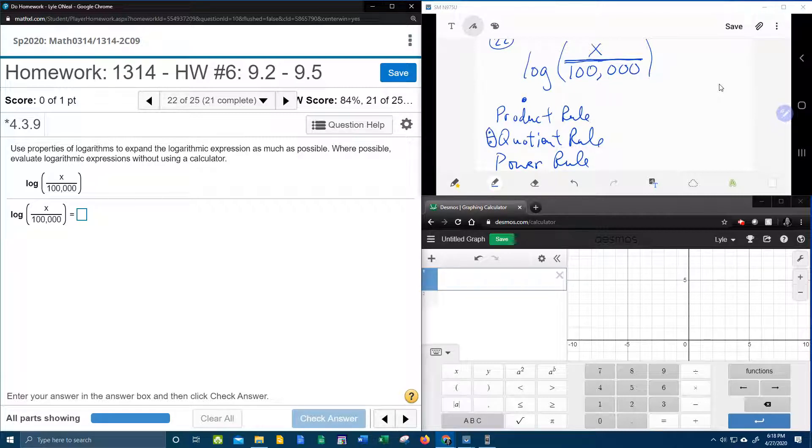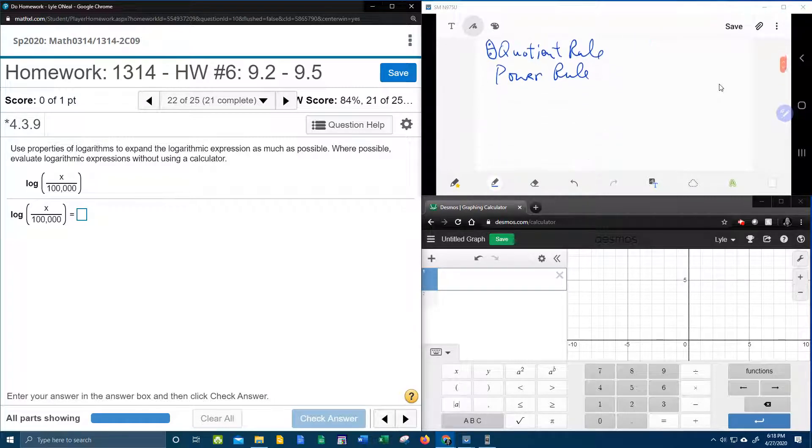The quotient rule says to divide and a fraction says to divide. If you're taking the log of a fraction, that'll turn into subtraction. It's always log of the top minus log of the bottom.